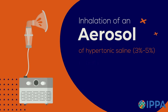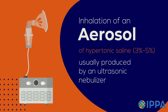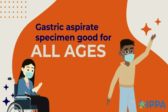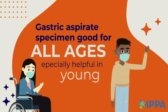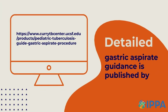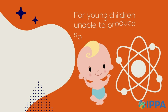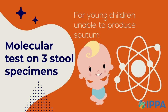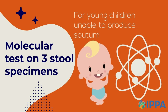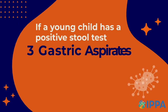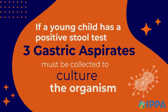Inhalation of an aerosol of sterile hypertonic saline (3% to 5%), usually produced by an ultrasonic nebulizer. A gastric aspirate specimen can be used for all ages and may be especially helpful in young children; detailed gastric aspirate guidance is published by the Curry International Tuberculosis Center. For young children unable to produce sputum, a molecular test on three stool specimens is acceptable in place of gastric aspirates. If a young child has a positive stool test, three gastric aspirates must be collected in order to attempt to culture the organism.